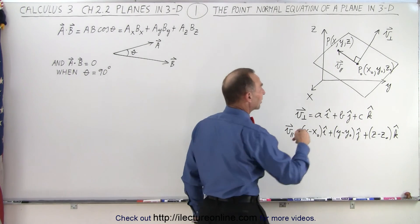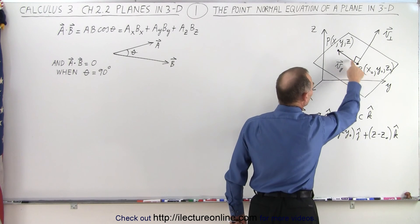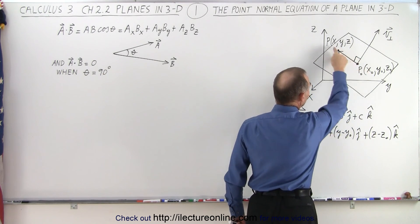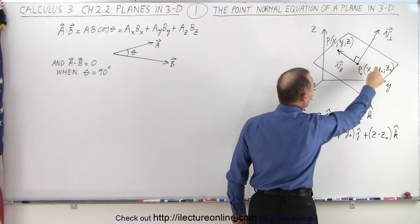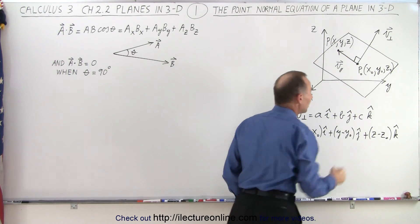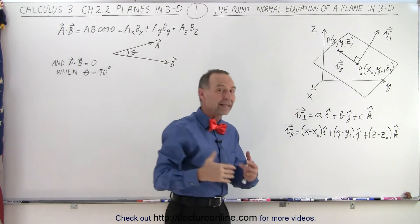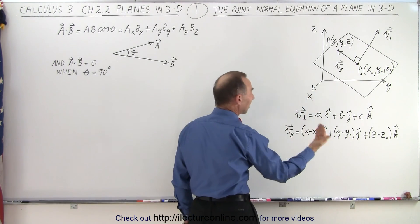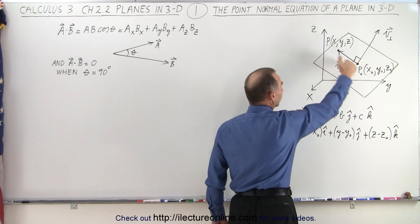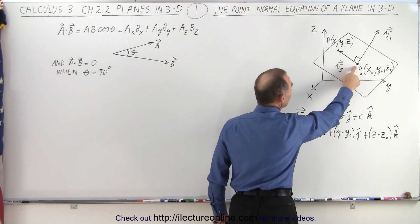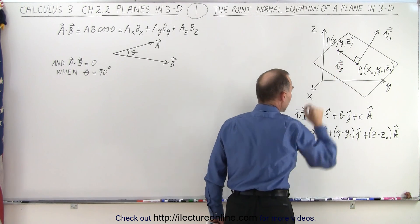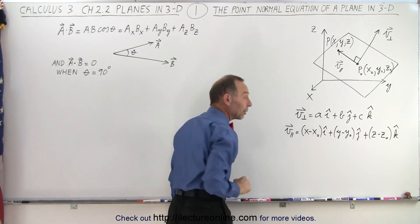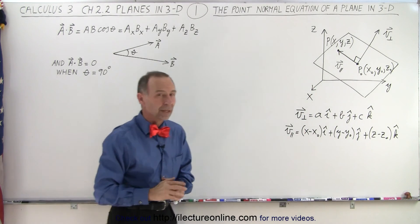We're going to draw a vector from the known point on the plane to a general point on the plane. What we do is take the differences x minus x-naught, y minus y-naught, and z minus z-naught, and make those the coefficients of i, j, and k. So we create a second vector which is parallel to the plane, running from P-naught to P. This is how we express the parallel vector, and this is how we express the perpendicular vector.